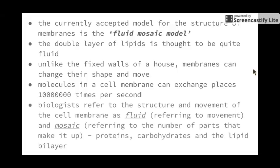Biologists refer to the structure and movement of the cell membrane as fluid mosaic. Fluid refers to the movement of the cell membrane, and mosaic refers to the different parts that make it up, including the proteins, carbohydrates, and phospholipid bilayer.